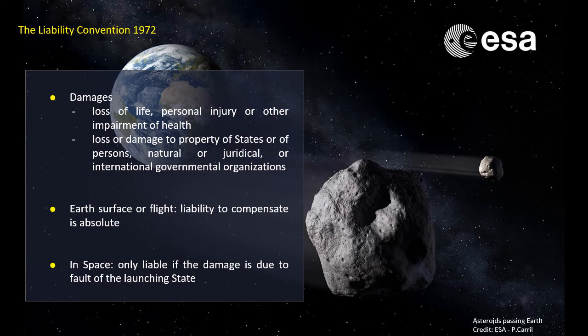The Liability Convention of 1972 is a more detailed version of the Outer Space Treaty. It imposes liability for damages incurred by another state in the form of loss of life, personal injury, other impairments of health, loss or damage of property of states or persons, or property of international governmental organizations.